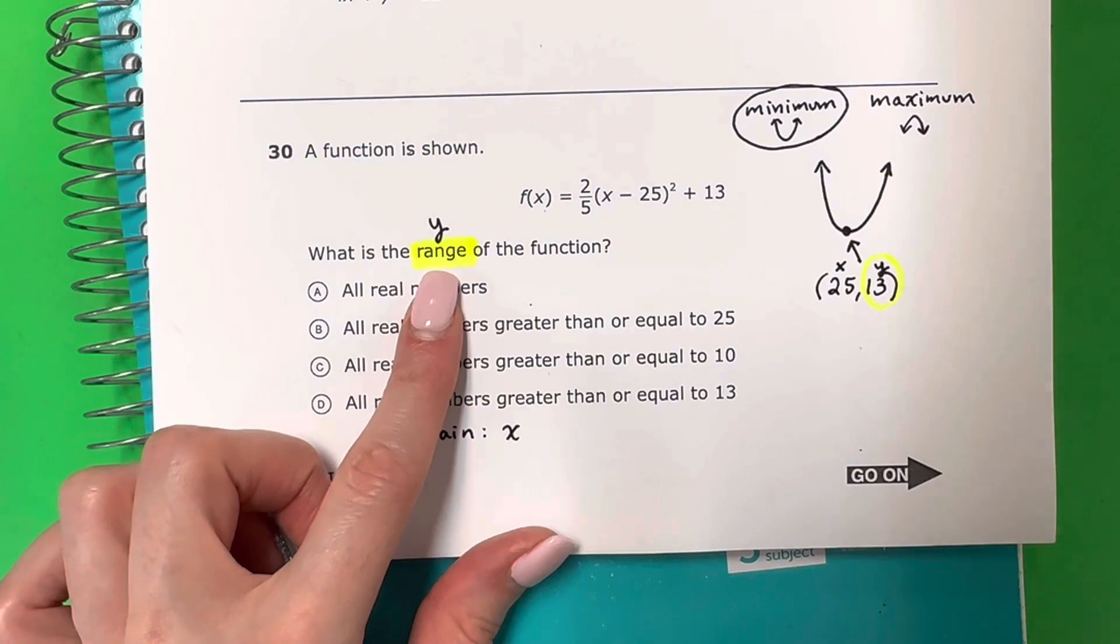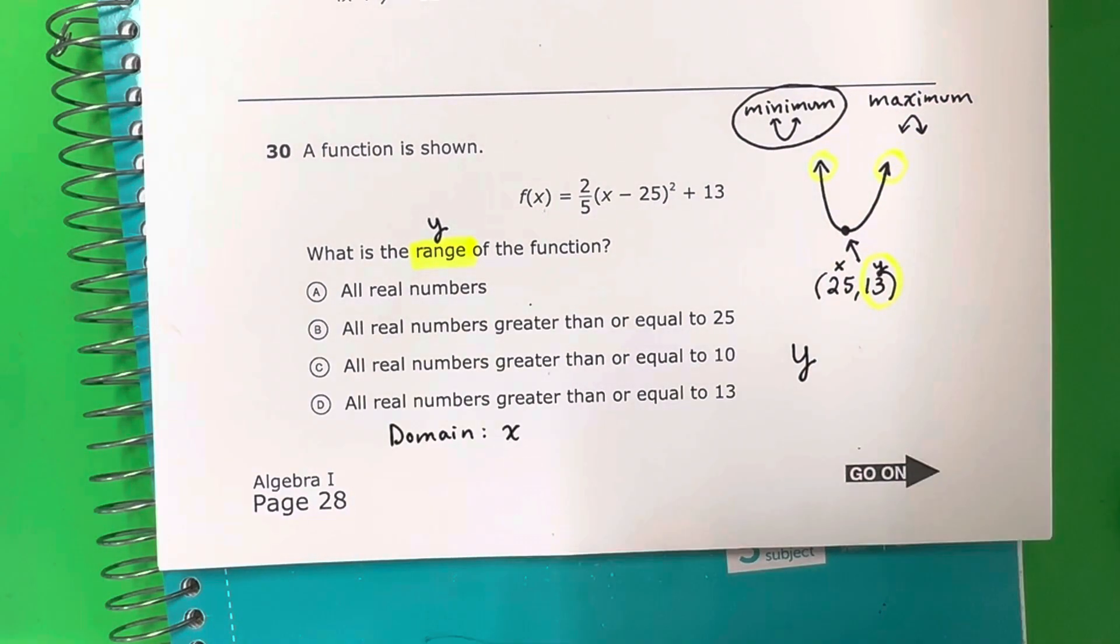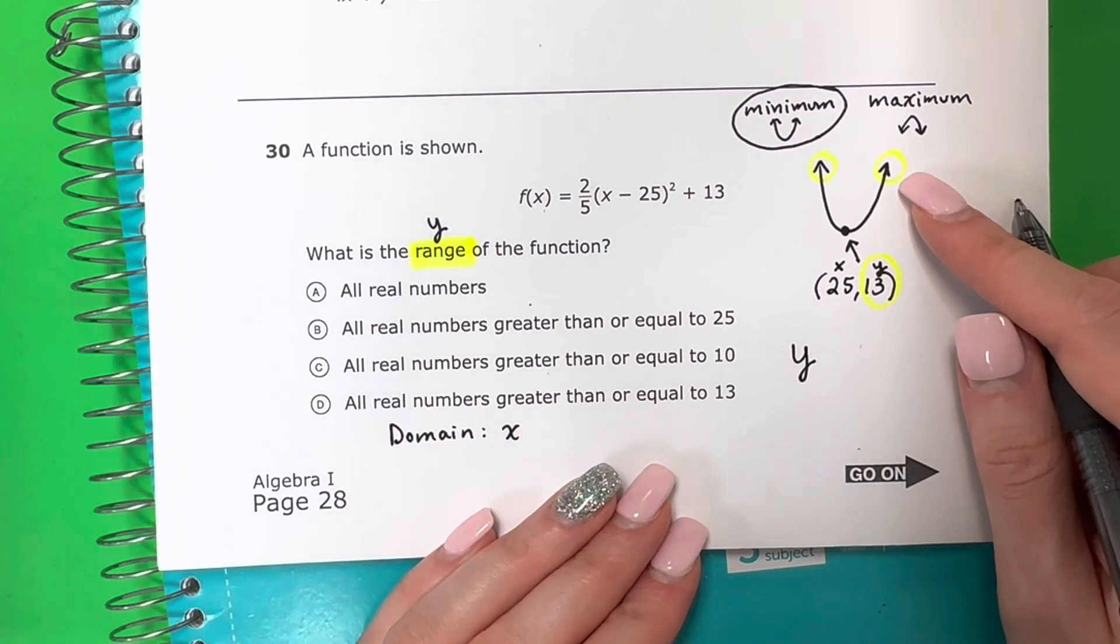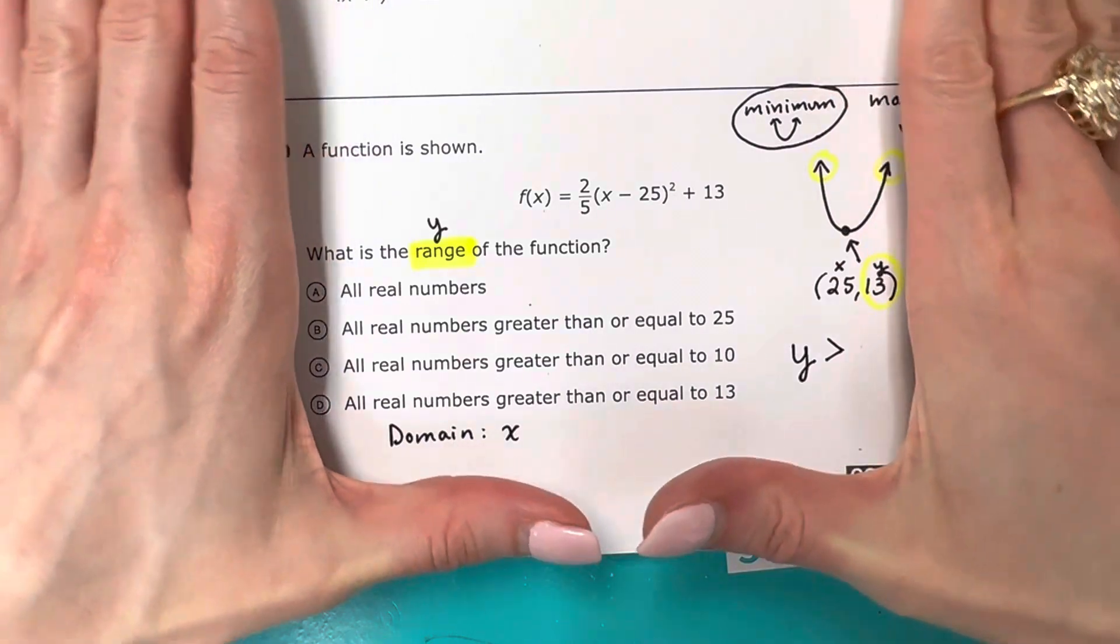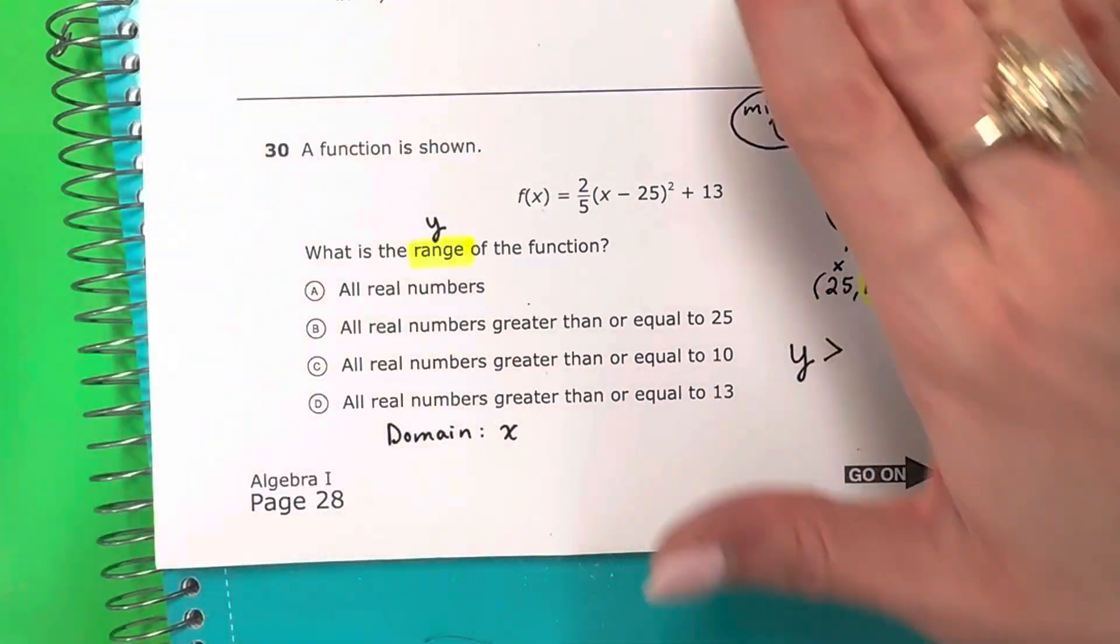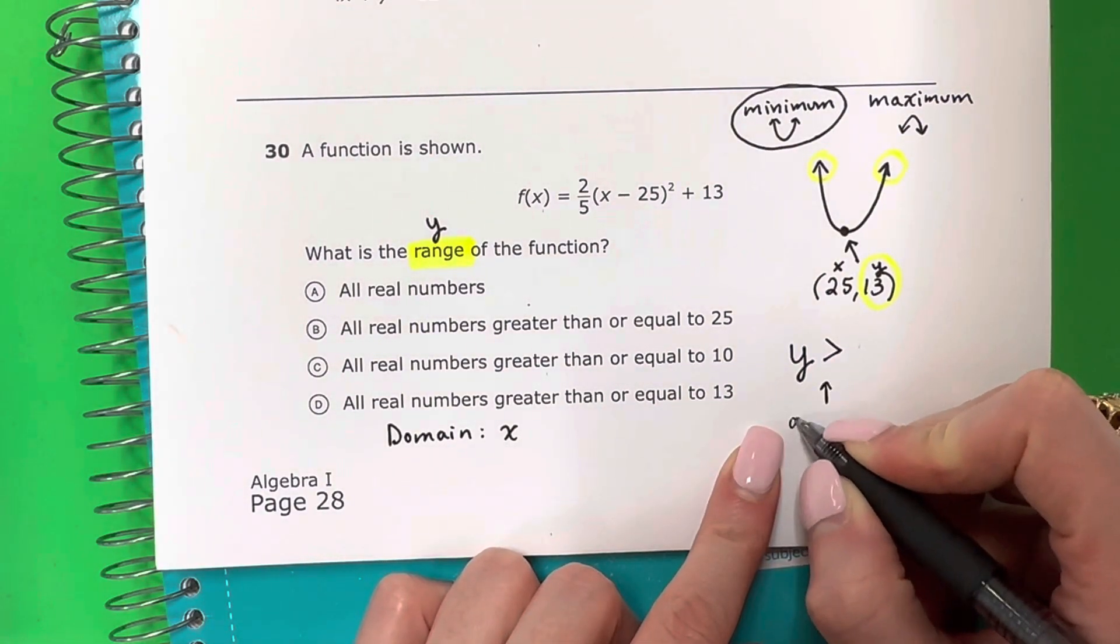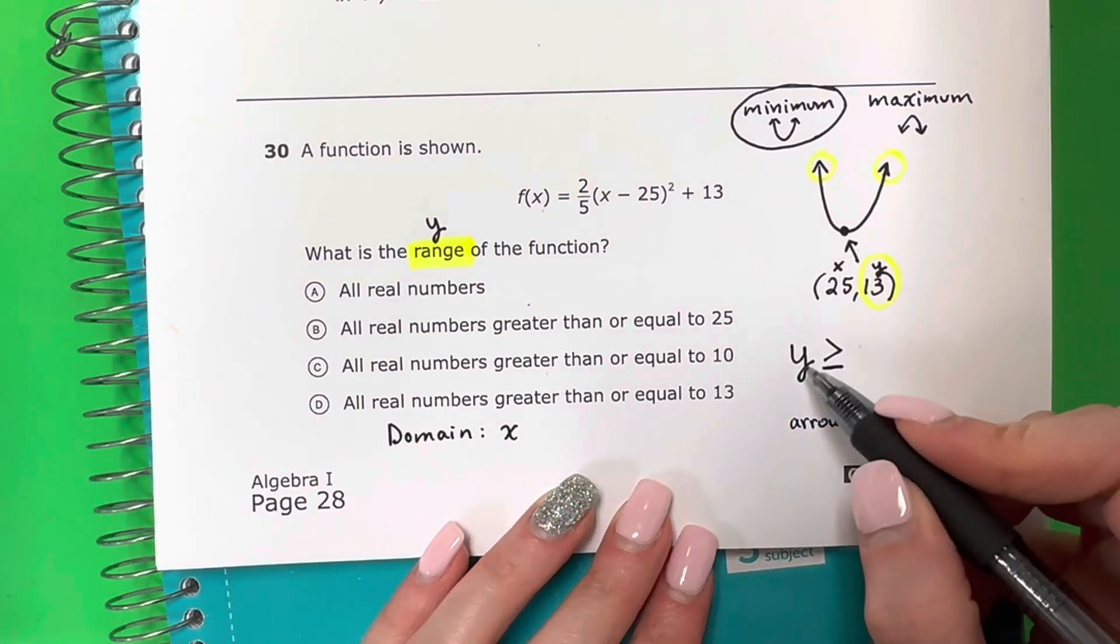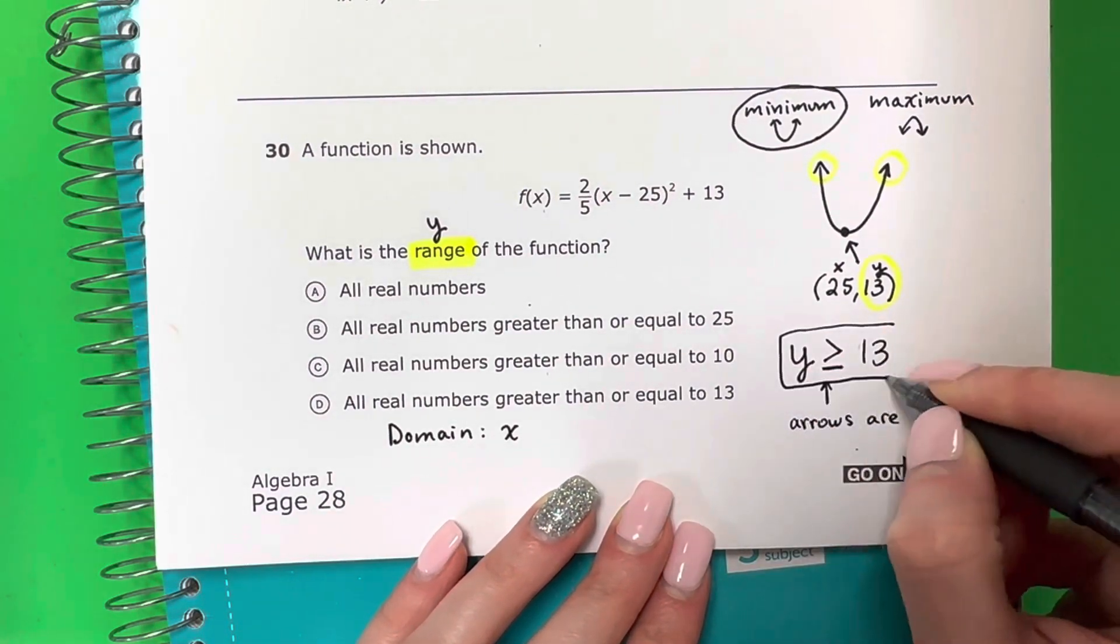And how you would do this is for the range, it's Y, so I'm going to write Y. You're going to look at the arrows. Look at the arrows here. They are going up. So if they are up, up means big. Big is greater or less? Big is greater. This is greater right over here, and how you can remember is you can do the little hand thing. Which one makes an L? L is this one, this is less than, and then the other one is greater than. That's how I like to remember it. So Y is greater than, and it's greater because the arrows are up. And then you're going to put a line because there is a point here. So it's Y is greater than or equal to, and then you're going to put the number for Y, which is 13.